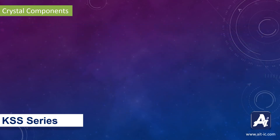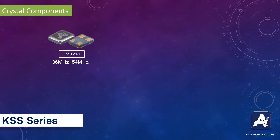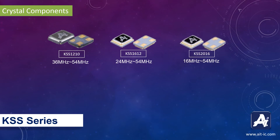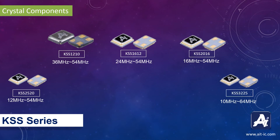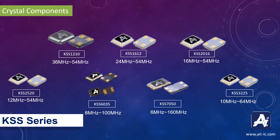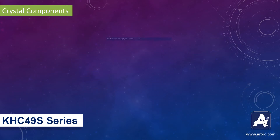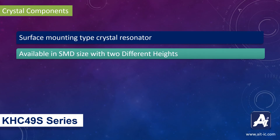The KSS series has various size crystals with a wide range of frequencies: KSS 1210 with a frequency range of 36 to 54 MHz; KSS 1612 with 24 to 54 MHz; KSS 2016 with 16 to 54 MHz; KSS 2520 with 12 to 54 MHz; KSS 3225 with 60 MHz; KSS 6035 with 8 to 100 MHz; KSS 7050 with 6 to 160 MHz; and KSS 4960 with 60 MHz.